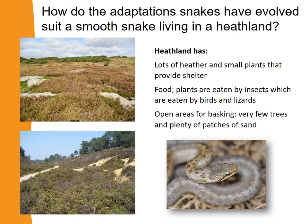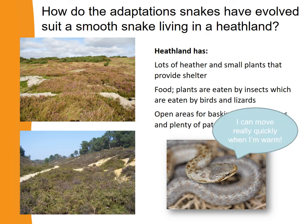Now let's finish by thinking about a modern example. How do the adaptations snakes have evolved suit a smooth snake living in a heathland? The heathland habitat has lots of heather and small plants providing shelter, a food chain from insects to birds and lizards to the smooth snake, and open areas for basking where the smooth snake can warm up on patches of sand. The smooth snake has scales that help it move around that habitat well. It is cold-blooded, so it conserves energy by using warm patches to get warm and move around more quickly, and it needs to eat less food because it doesn't use food to stay warm.